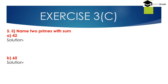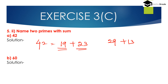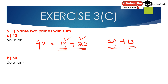Now question number 5, second part: name 2 prime numbers with sum 42. We have to find 2 prime numbers whose sum is 42. We can write 42 as 19 plus 23. Here both 19 and 23 are prime numbers. So the number 42 is the sum of 2 prime numbers: 19 and 23.